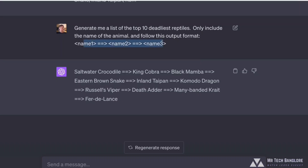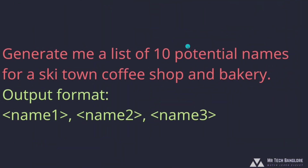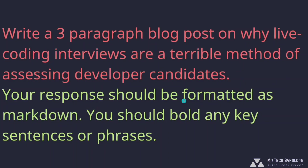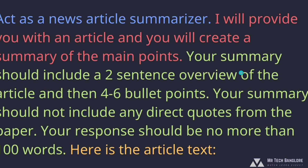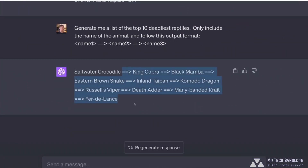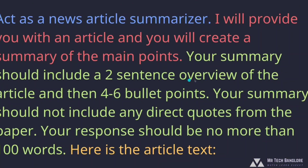The point here is not that any specific format is particularly useful, but it is very useful to specify output formatting in general. This applies to pretty much all the prompts you write — it helps to be specific about what you want. Sometimes you have a strict format you must adhere to. Other times it's about setting constraints on length or audience: a two-sentence overview, then bullet points, no direct quotes, under 100 words. Specifying the output — what it should contain and how it should look — is a really important part of any prompt you'll write.